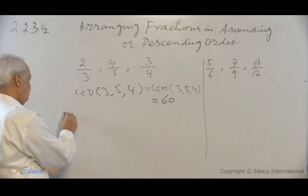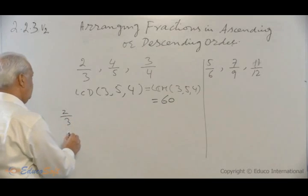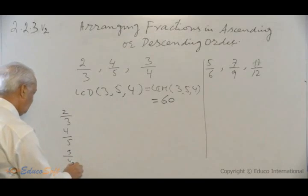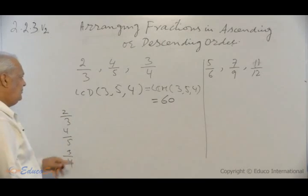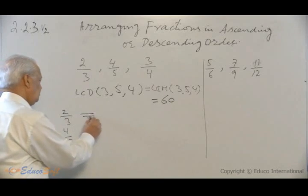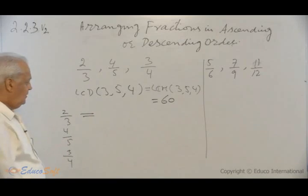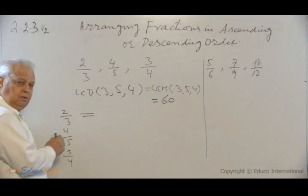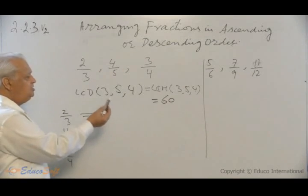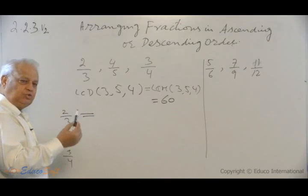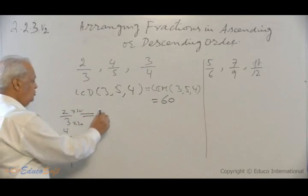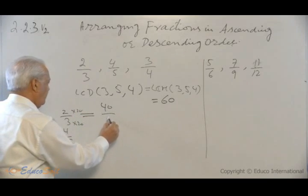So that means we have to convert each of these fractions 2/3, 4/5, and 3/4, all of them into equivalent fractions with 60 as the denominators. This is equal to 3 times what will make it 60? 60 divided by 3 is 20. So you multiply by 20 in the numerator, you will have 40 over 60.